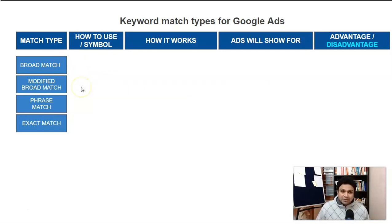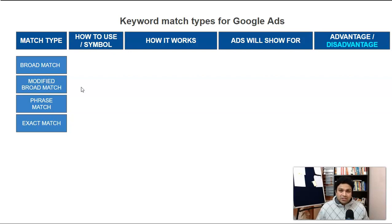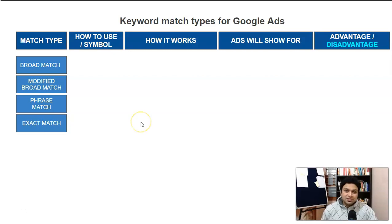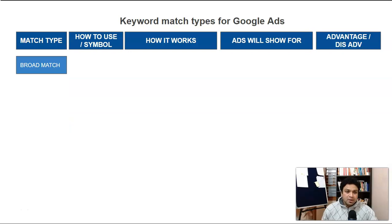In Google Ads there are four to five keyword types: broad match, modified broad match, phrase match, exact match, and negative match. Let's understand one by one how these keyword match types work.